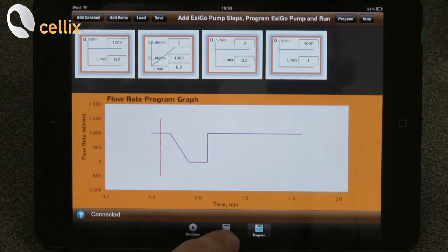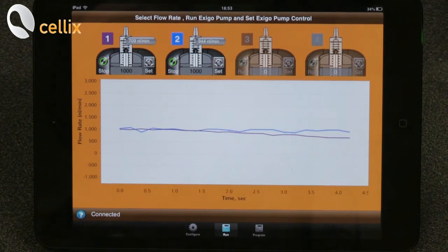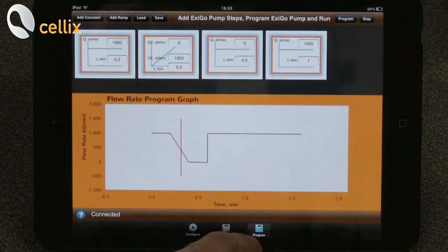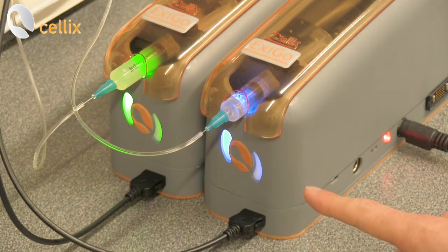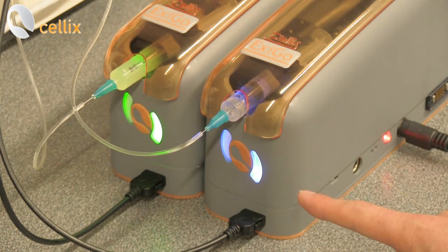We can come back to the view of the flow rates values clicking on the run button here. Or we can come back on the waveform selection mode here. As we can see the LED lights now they are blue. This indicates that the pump is executing a customized waveform perfusion mode.